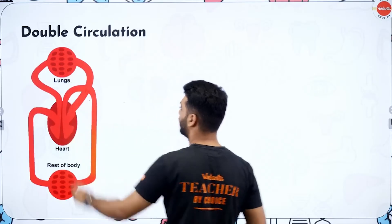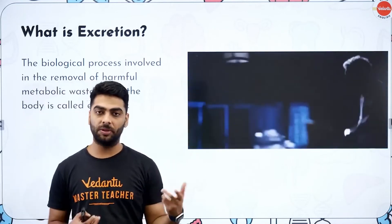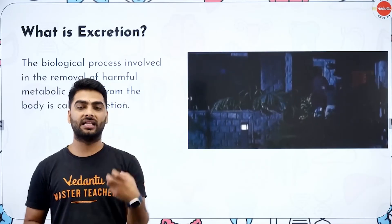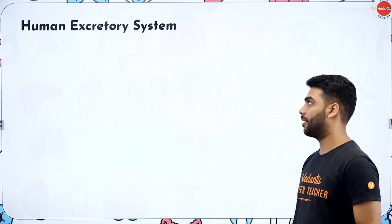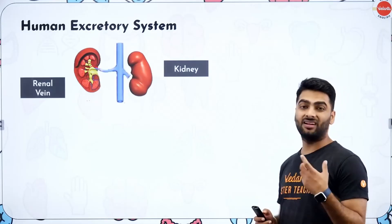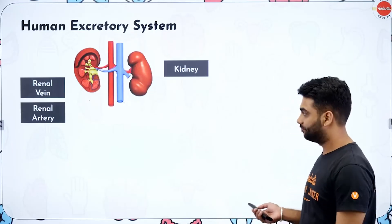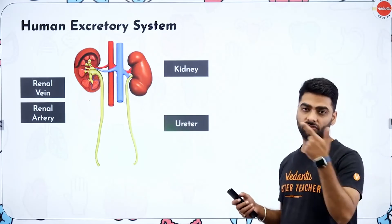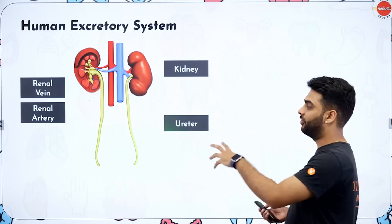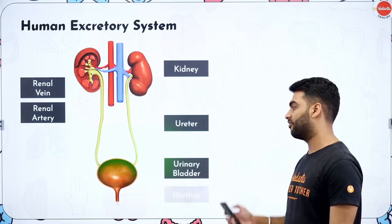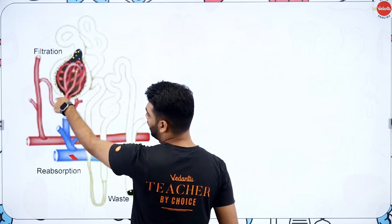Excretion is the process of removal of nitrogenous waste from the body. The organs of excretion in humans are kidneys, lungs, and skin — kidneys remove urine, skin removes sweat and oil, and lungs remove carbon dioxide. Kidneys have a renal artery bringing blood in and a renal vein taking blood back. Inside the kidneys are nephrons, which have the Bowman's capsule, glomerulus, PCT, DCT, and the loop of Henle. These filter the blood, and the filtrate passes to the ureters as urine, is stored in the bladder, and removed through the urethra.